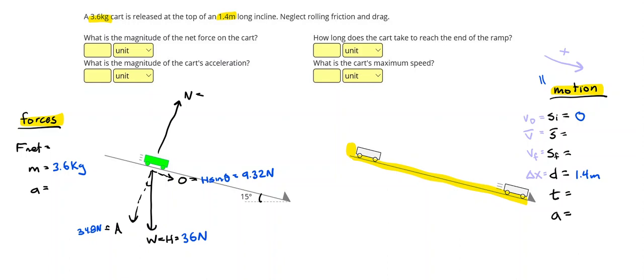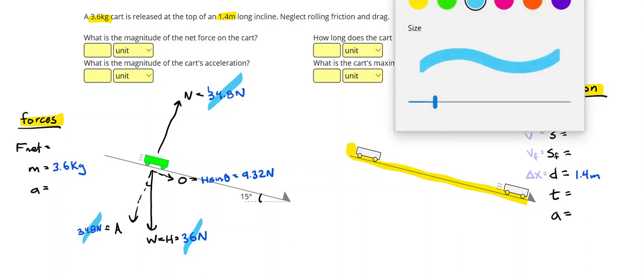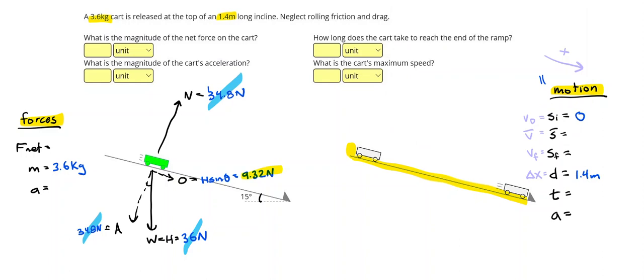Then I know I can cross out my hypotenuse. And that the adjacent side is going to balance with the normal force. And that leaves me just with 9.32 newtons as my net force. And that's the first answer I can check.